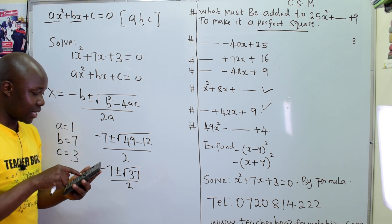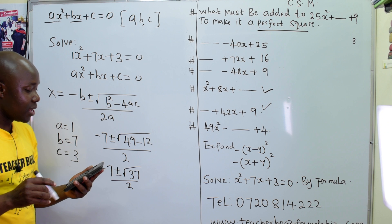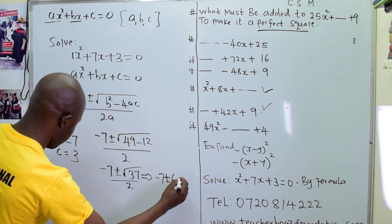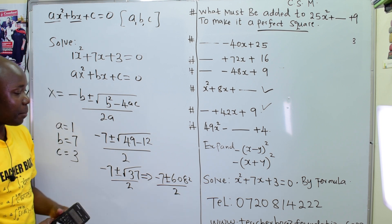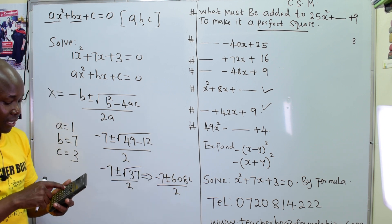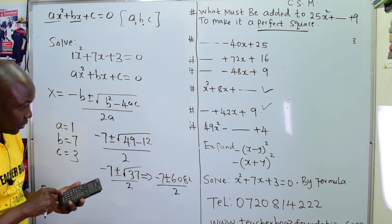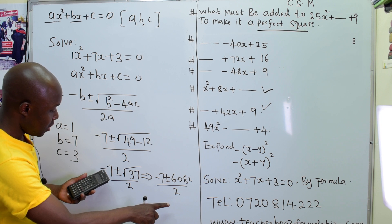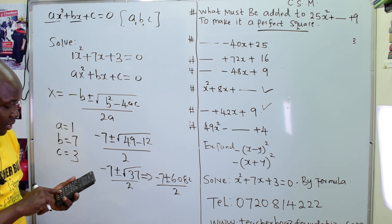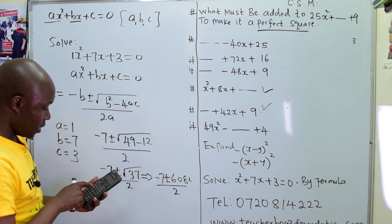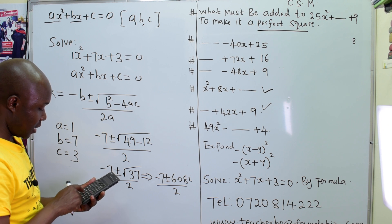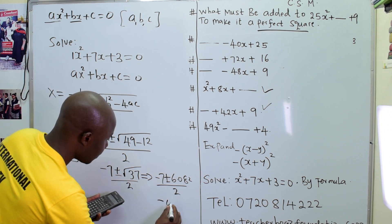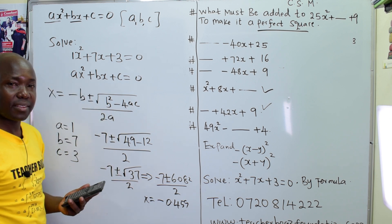Substituting: x equals negative 7 plus or minus the square root of 7 squared minus 4 times 1 times 3, all over 2 times 1. That gives negative 7 plus or minus the square root of 49 minus 12, over 2. So x equals negative 7 plus or minus the square root of 37, over 2. Using a calculator, the square root of 37 is approximately 6.082. Taking the positive: negative 7 plus 6.082 divided by 2 gives negative 0.459.